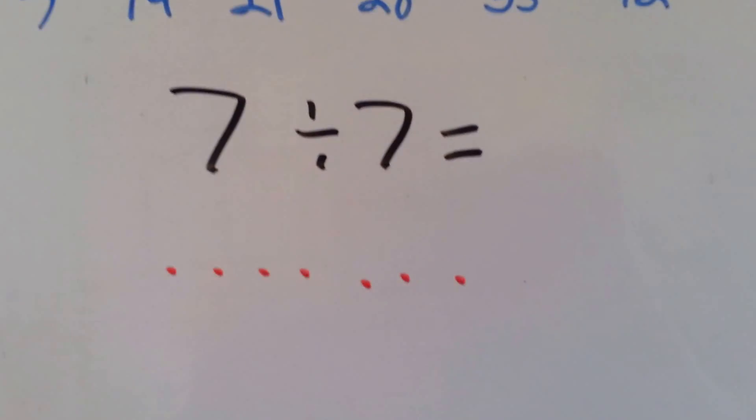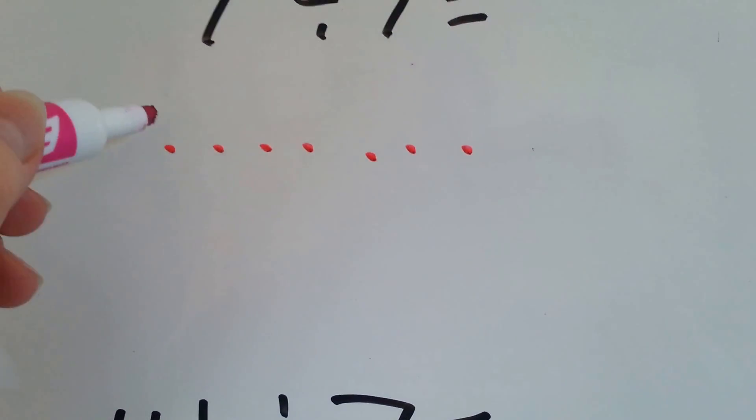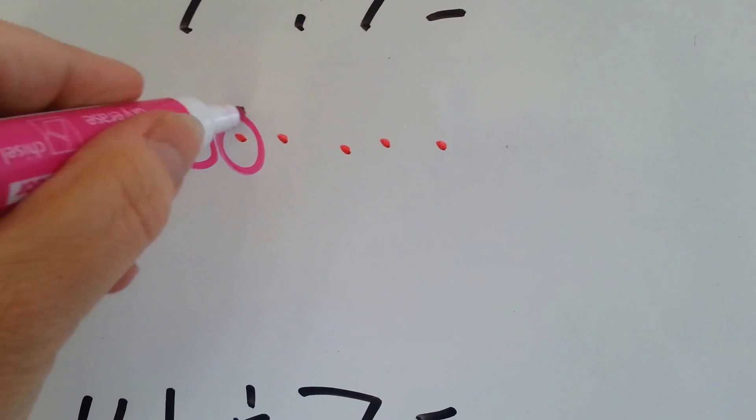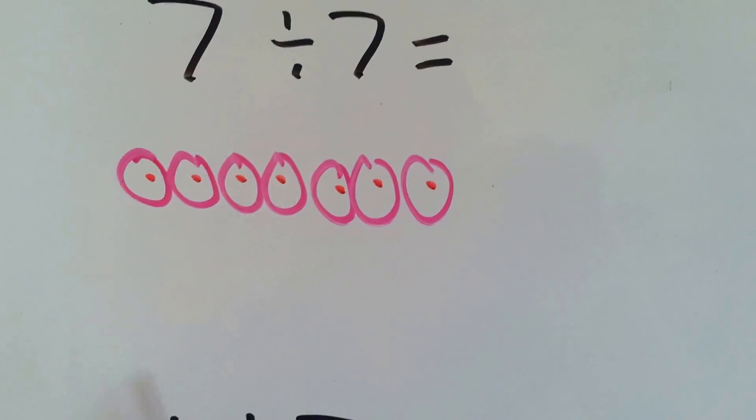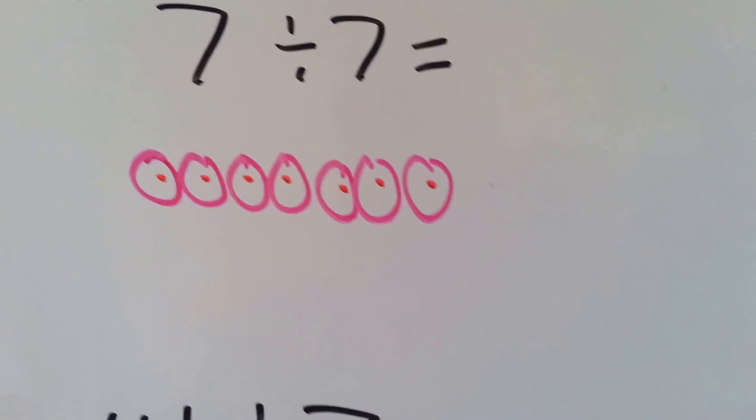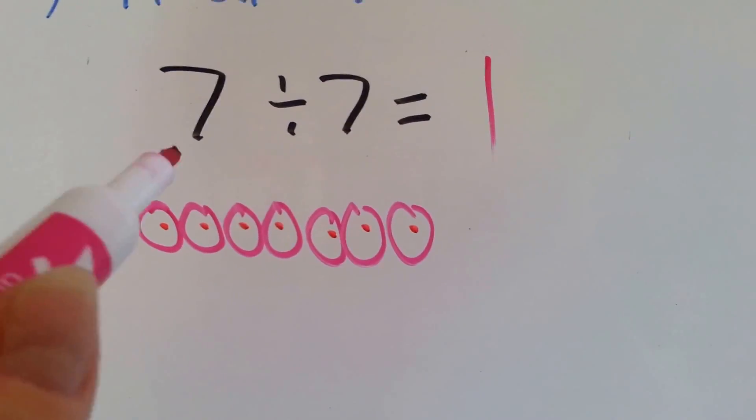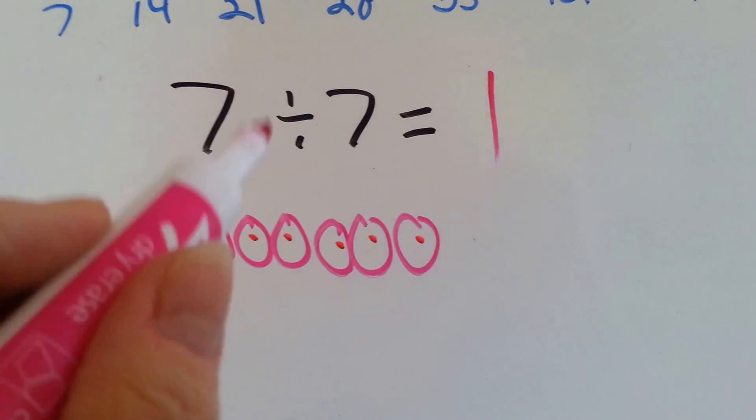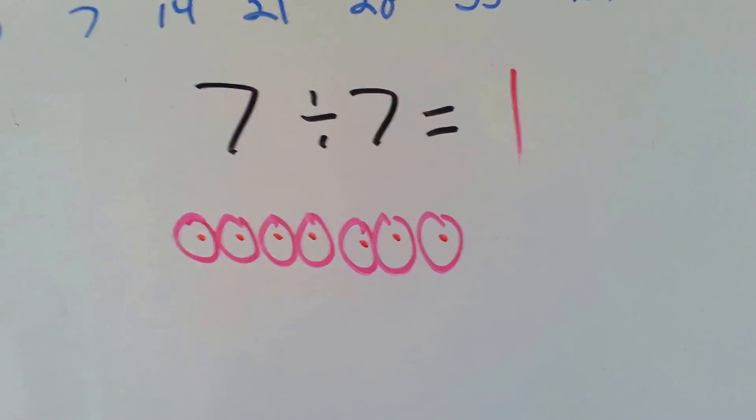7 divided by 7. We have 7 dots here and we're going to make 7 groups. Ready? 1, 2, 3, 4, 5, 6, 7. How many dots are in each group? 1. This is like the identity property in multiplication. This is the same thing. A number that's divided by itself always equals 1.